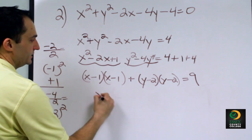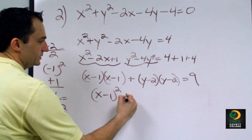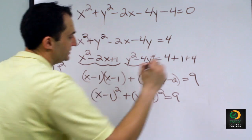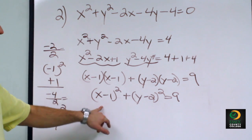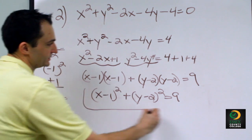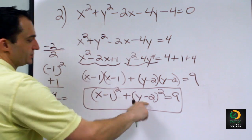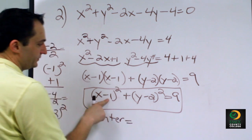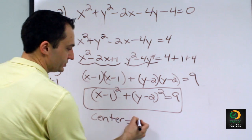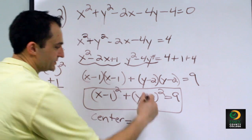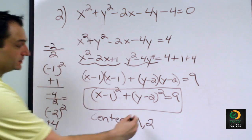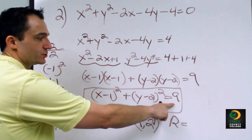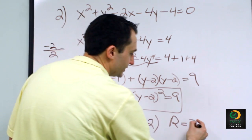We can rewrite this as x minus 1 squared plus y minus 2 squared equals 9. This is the equation of the circle in standard form. From this we can determine that our center is at the opposite of negative 1 and negative 2, which is positive 1 and positive 2 — so center at (1, 2) — and our radius is the square root of 9, which is 3.